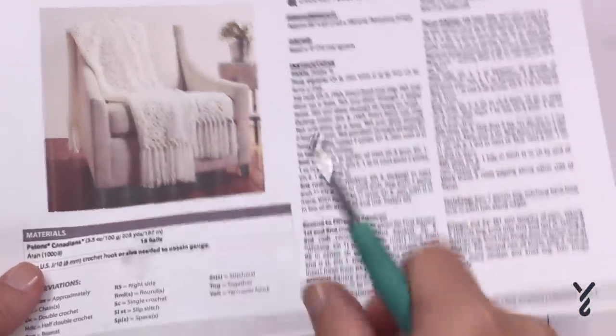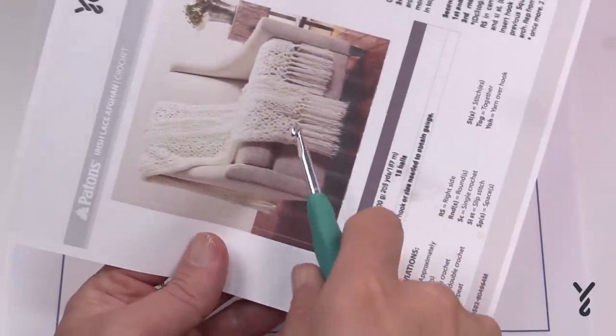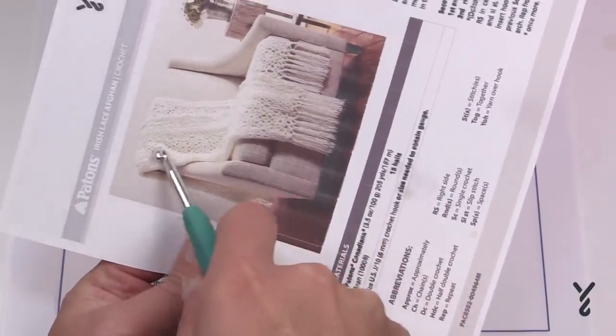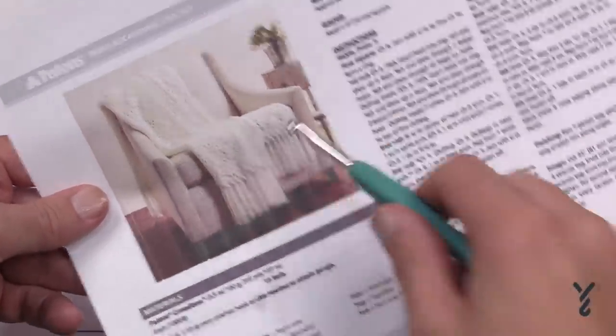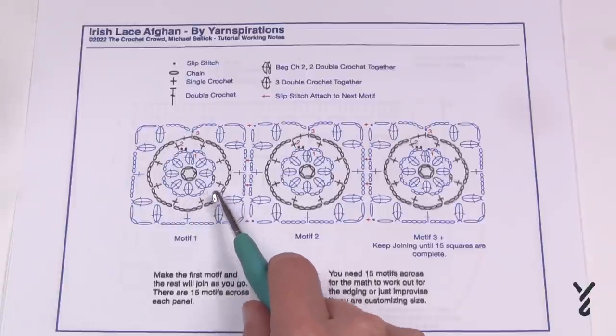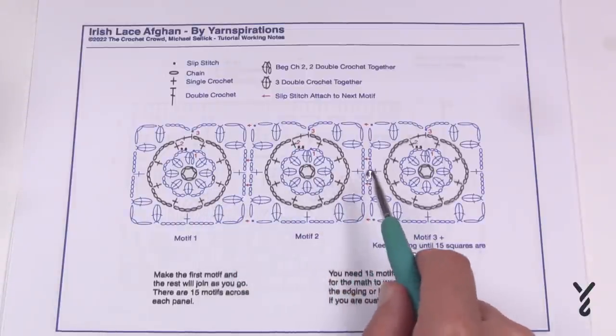So what we have here if you take the blanket and you put it this way, the blanket is being made up of panels in the lengthwise this way. So when it's displayed it's actually turned the other way. So what this is it's made up of these little motifs that are joining and there's a total of 15.